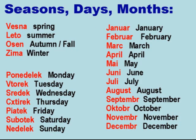Seasons: Besna — Spring. Leto — Summer. Osin — Autumn. Zima — Winter. Days: Ponedelik — Monday. Torek — Tuesday. Sredek — Wednesday. Shtirek — Thursday. Piatek — Friday. Subotek — Saturday. Medelek — Sunday. Months: January, February, March, April, May, June, July, August, September, October, November, December.